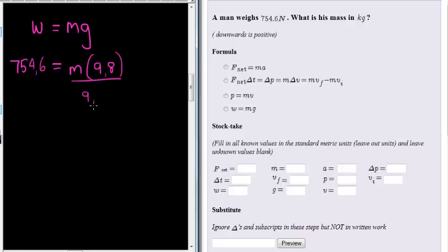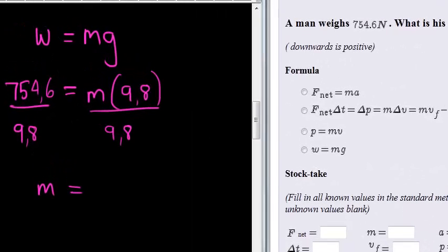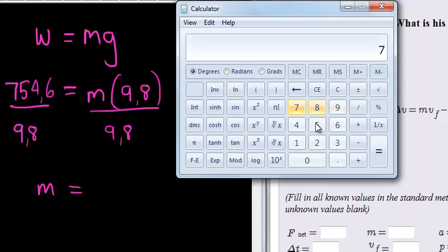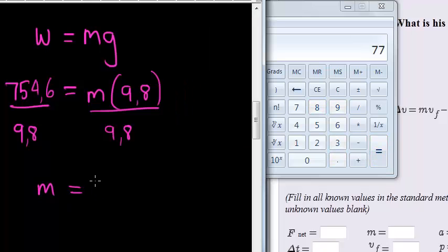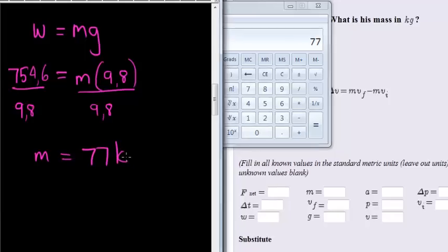So dividing both sides by 9.8 gives me that the mass is equal to, we need to divide this side using our calculator. 754.6 divided by 9.8 gives me 77. His mass is 77 kilograms.